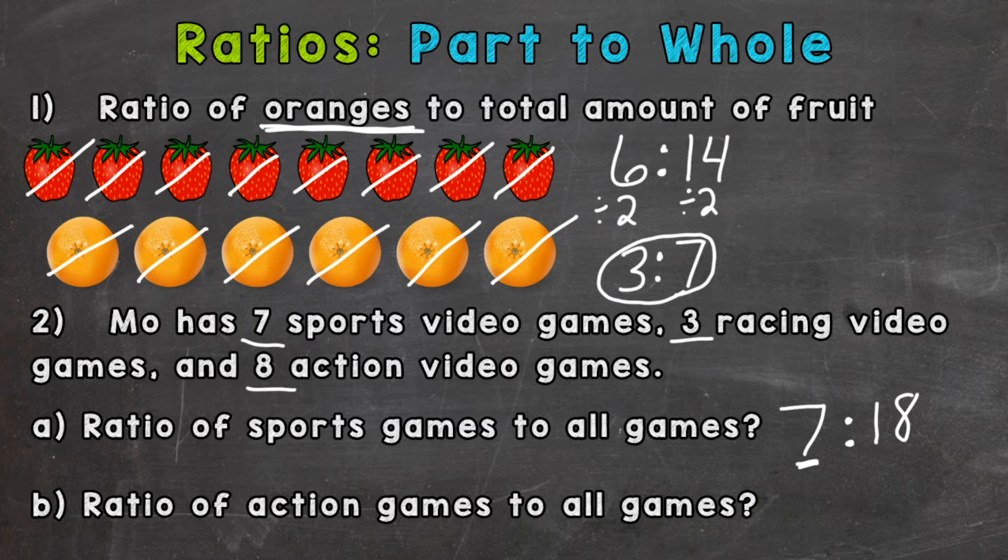...is the whole group of 18 video games. So 7 to 18. The only common factor between 7 and 18 is 1, so our ratio is simplified.